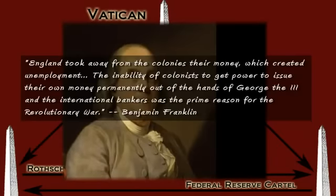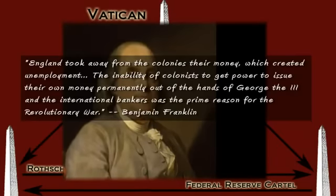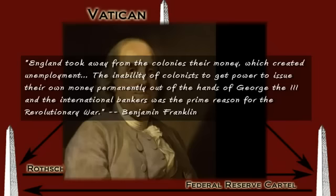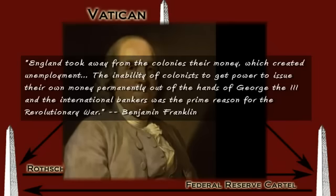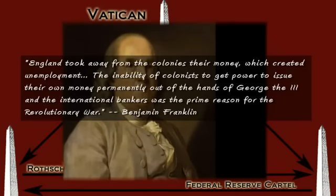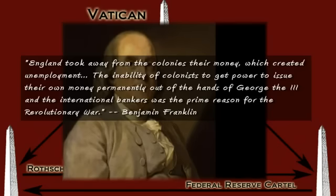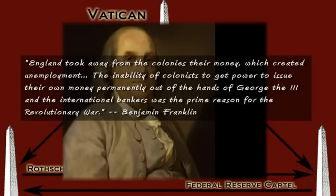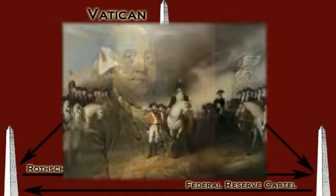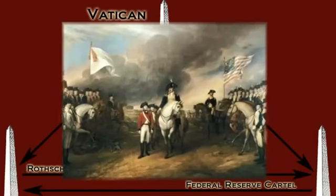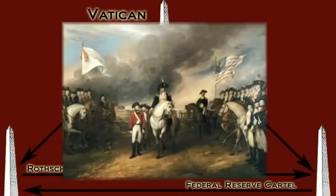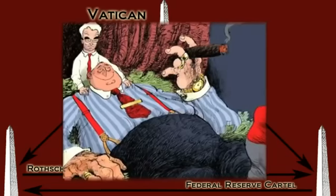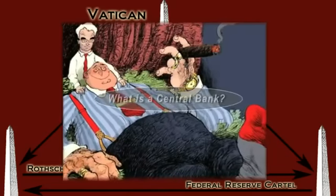Benjamin Franklin wrote, 'England took away from the colonies their money which created unemployment.' The inability of the colonists to get power to issue their own money permanently out of the hands of George III and the international bankers was the prime reason for the Revolutionary War. In 1783, America won its independence over England; however, the central bank model and the corrupt greed concept associated with it had just begun.